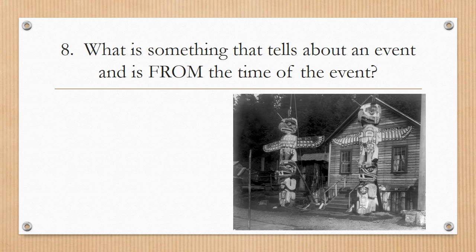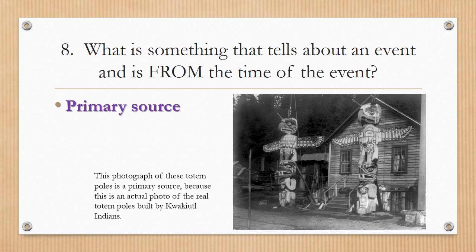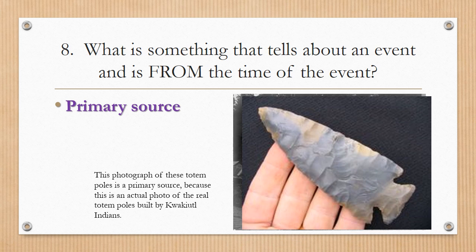Number eight: What is something that tells about an event and is from the time of the event? A primary source. This photograph of totem poles is a primary source because it is an actual photo of real totem poles built by the Kwakiutl Indians. Most photographs are primary sources because they capture the event or image from that time. An arrowhead would also be a primary source from Native American cultures — it is the actual piece that would have been used by the Indians at that time.